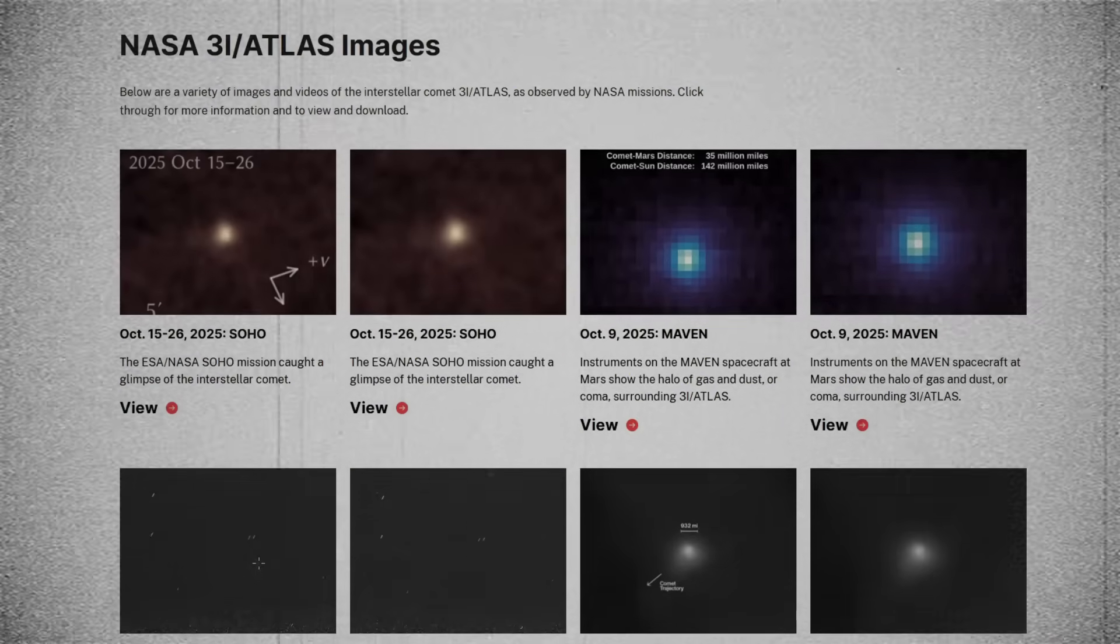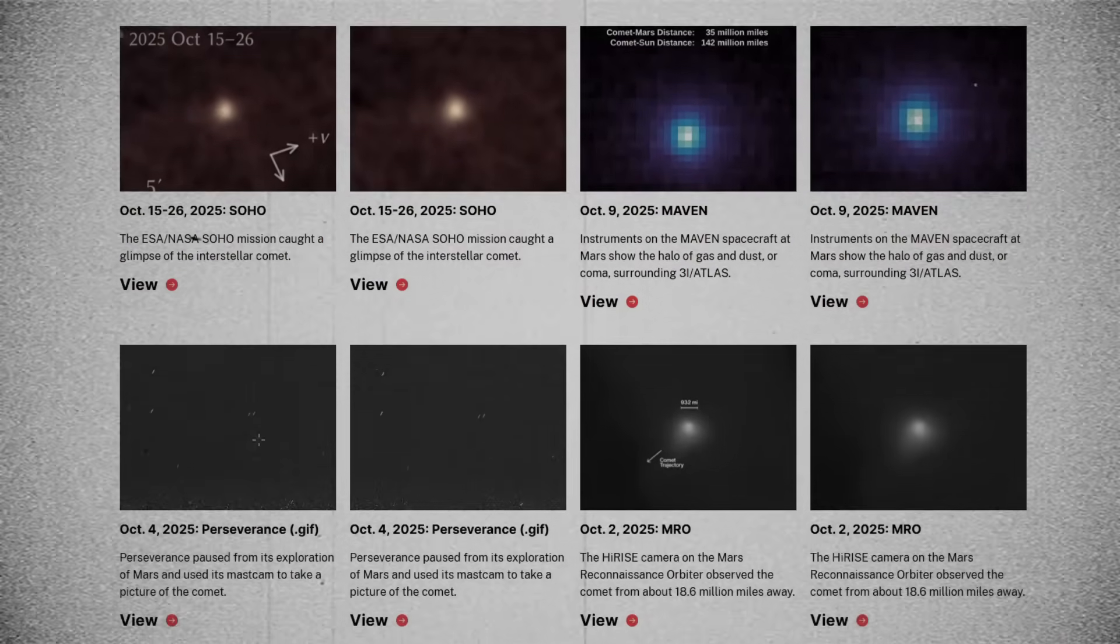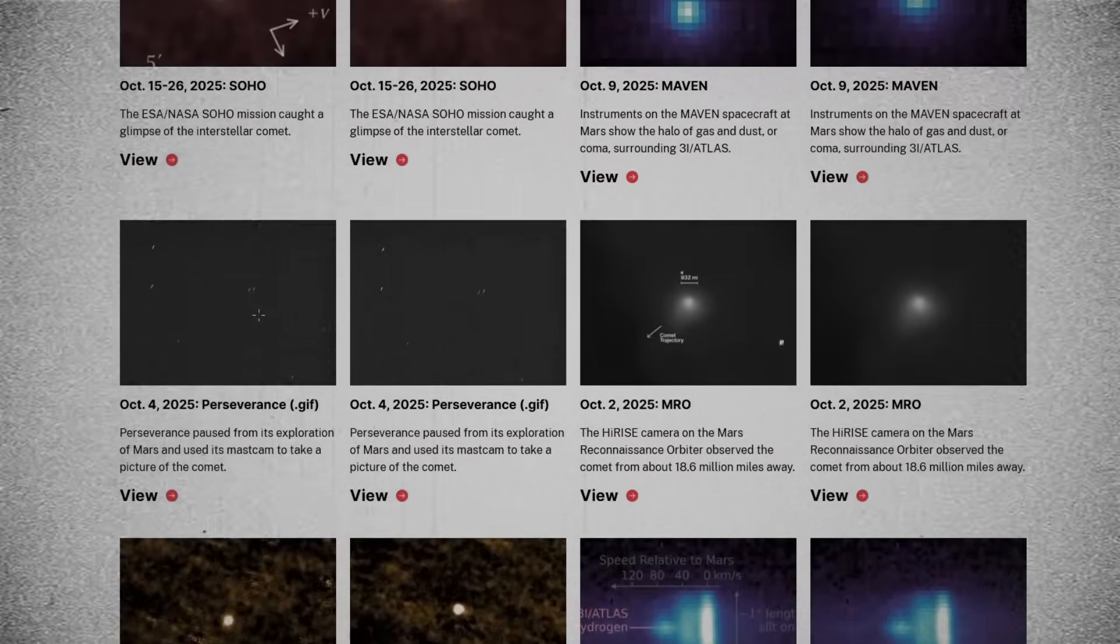As it gets closest to Earth, that will be on December 19th. We'll have the best opportunity to use the hundreds of telescopes on Earth and the Hubble and Webb Space Telescopes to get our best data on it. The newest images of 3-I Atlas arrive from a coordinated network of observatories, and they offer the clearest view yet of its core.